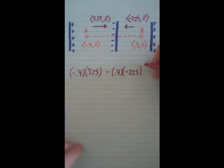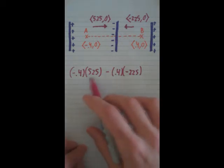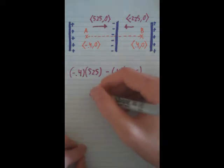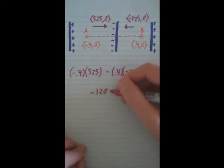So essentially, you just come down and eventually, once you do all your math out, you'll get that the drop is going to be negative 120 volts.